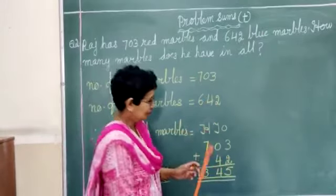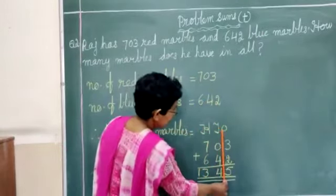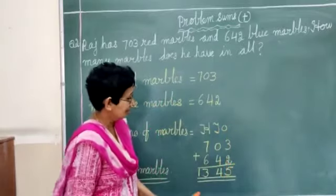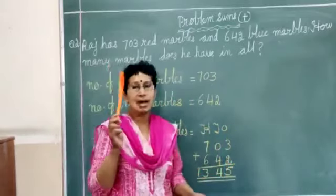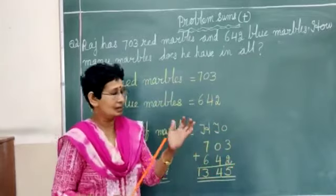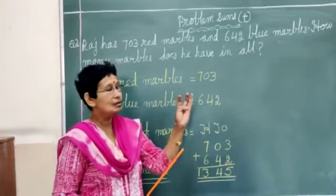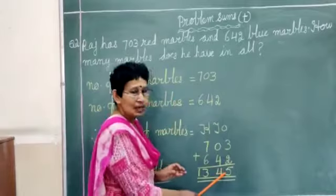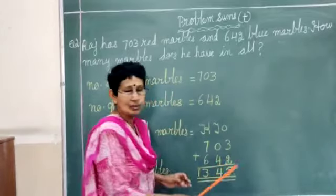Now start from the ones side. 3 plus 2 in ones side, isn't it? So 3 is in our mind, 2 is on our finger. 3, the next number is 4, 5. We have written the answer: 5. There is no carryover number.